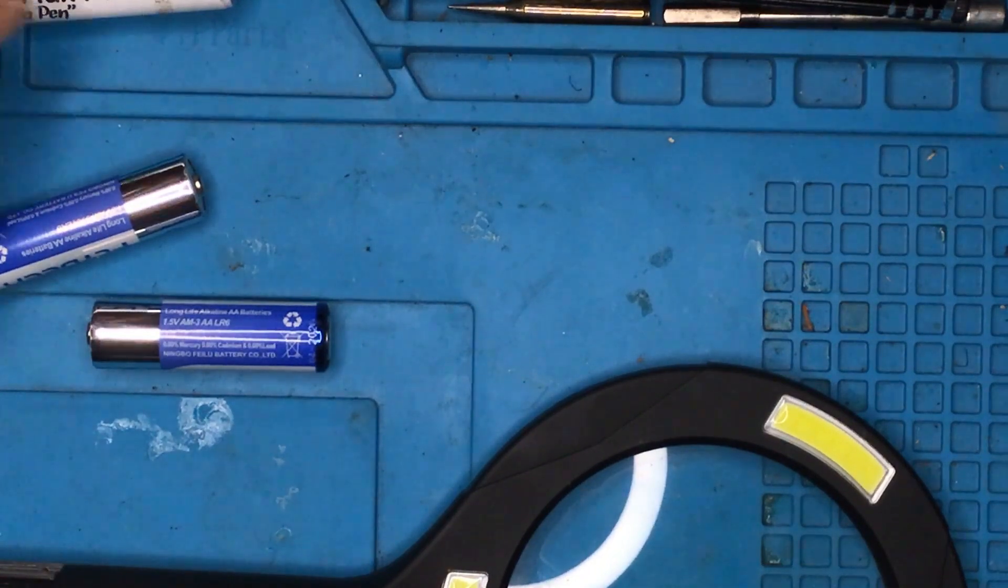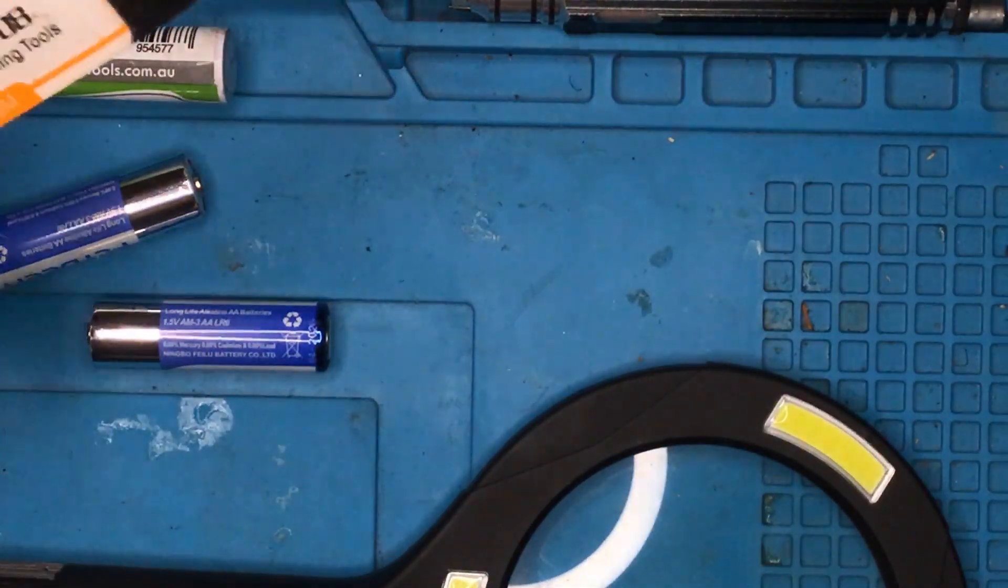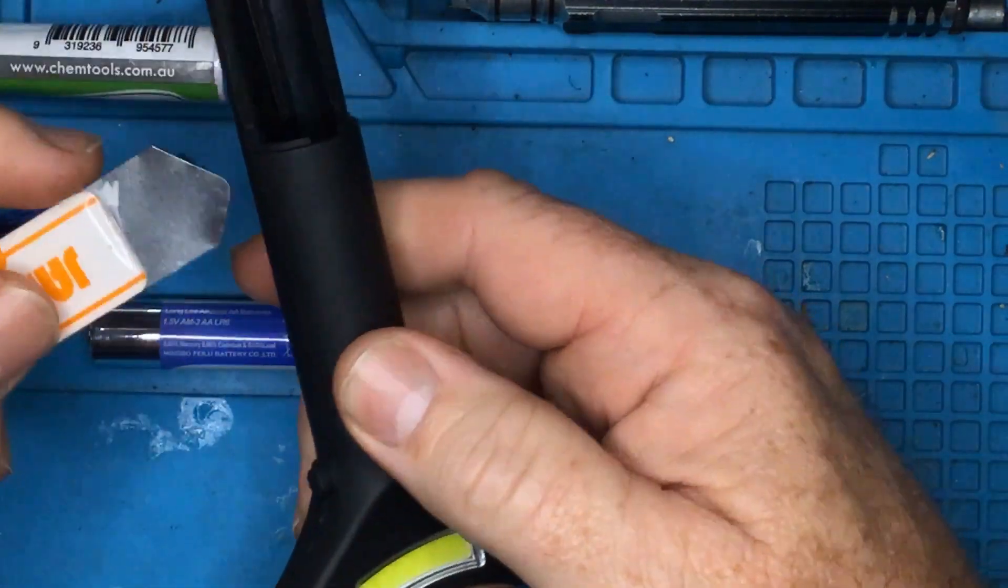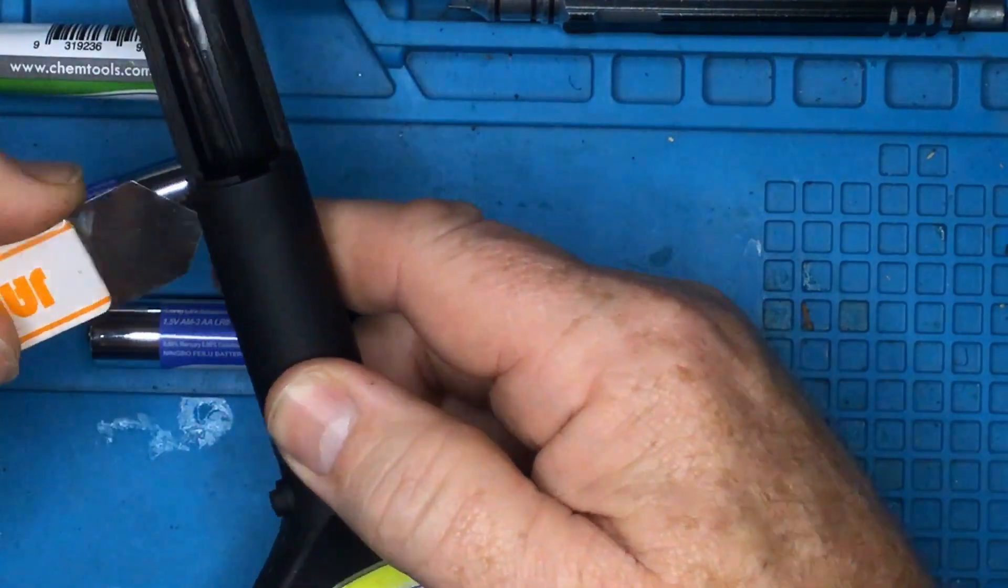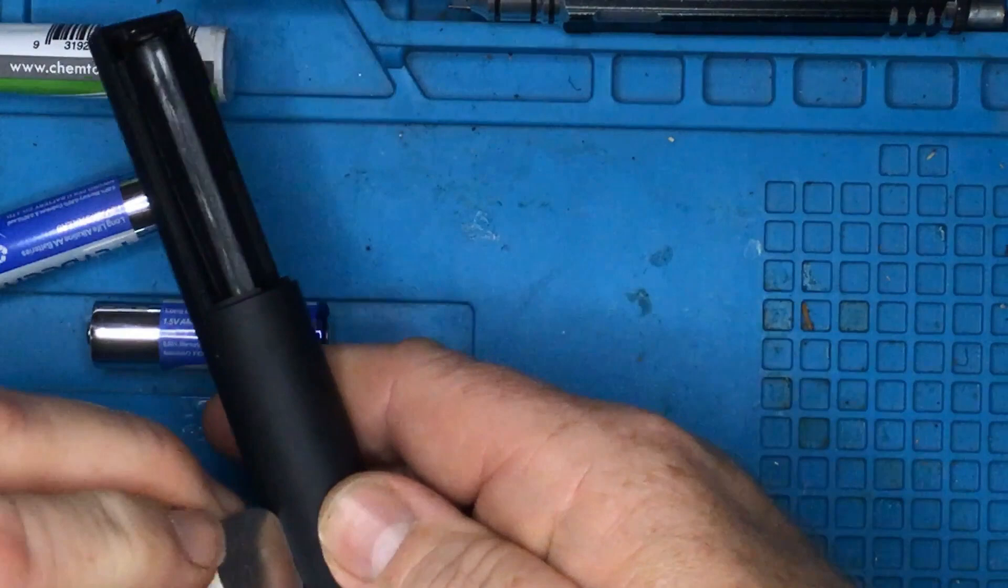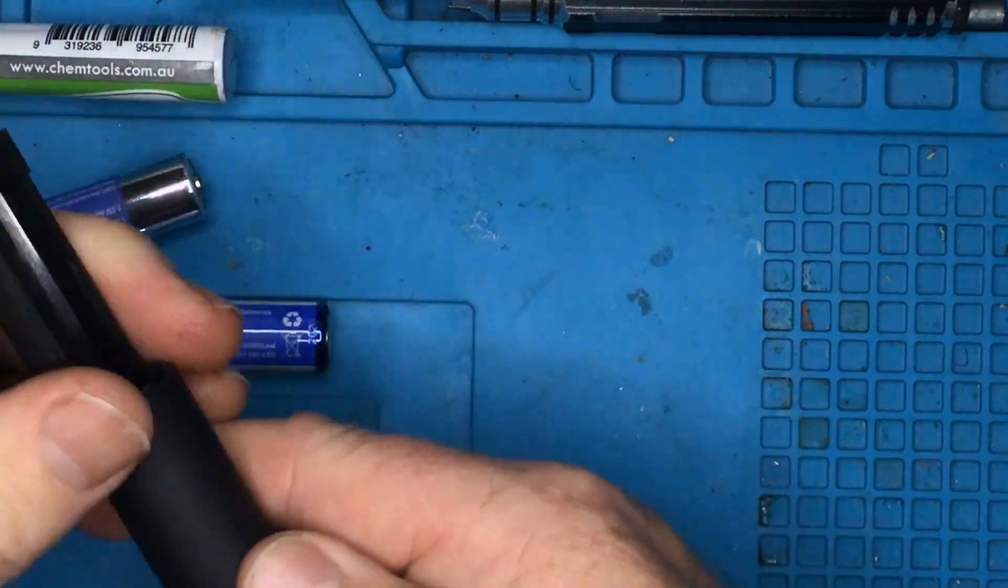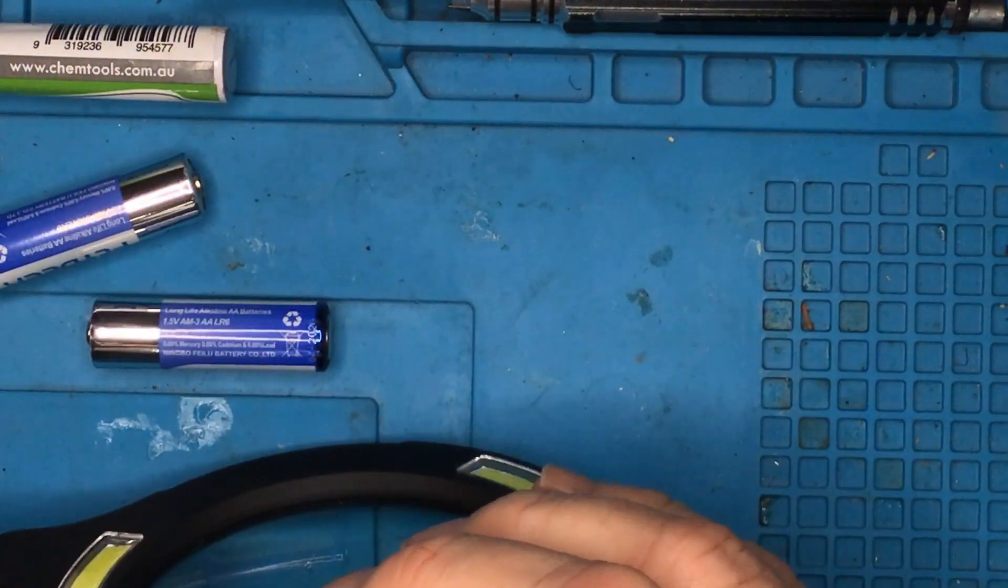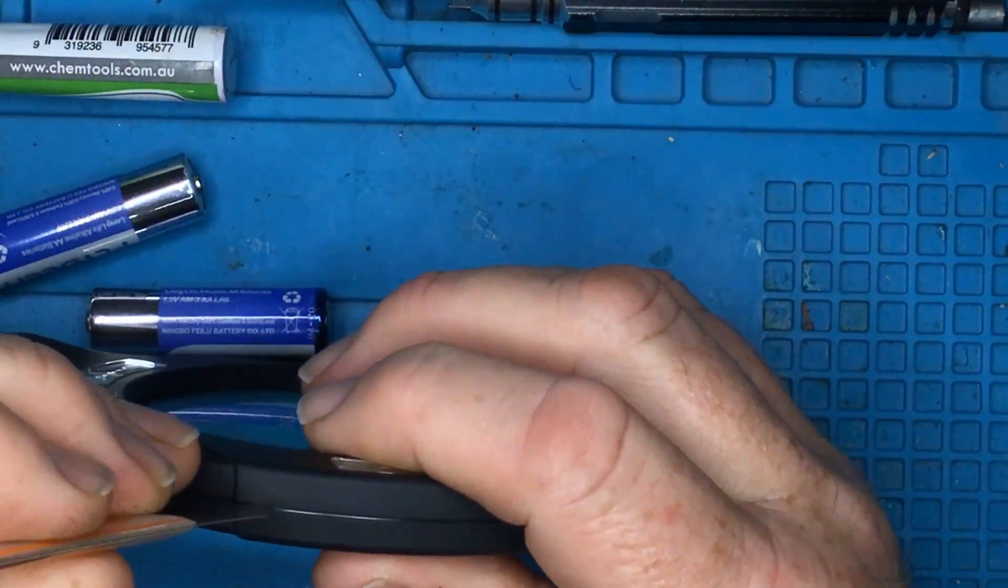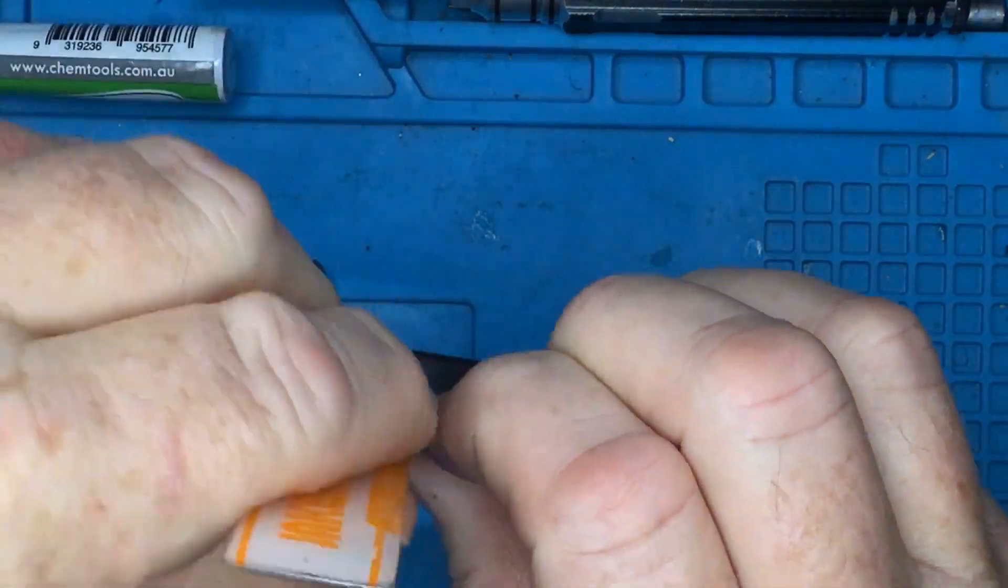But the real question is, can I get it to separate? Let's see if I can use a spudger. So, there's a big gap there.